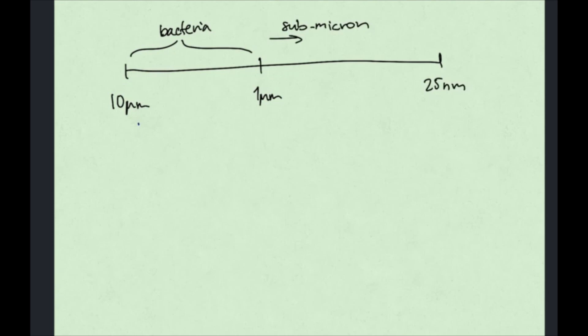Particles much larger than the wavelength of laser light can be treated in the Mie regime, where ray optics can explain the behavior of the particle. However, for submicron Rayleigh particles, we need to consider the wave optics picture.